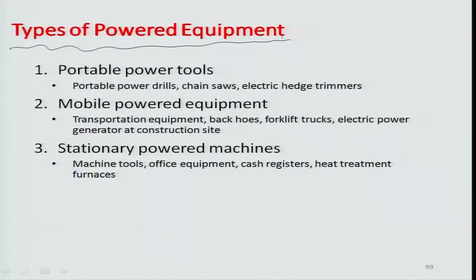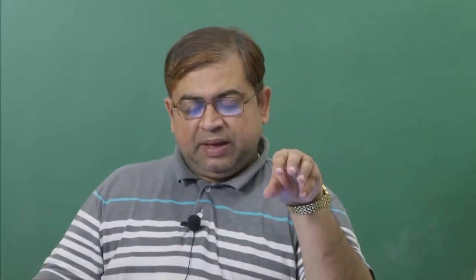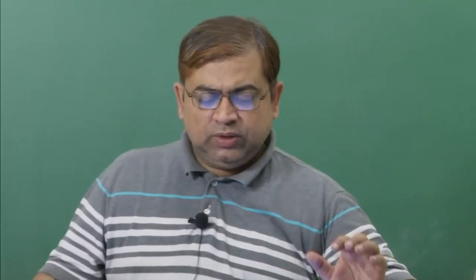When we talk about different powered equipment, there are various types available based on whether they are portable, mobile, or stationary. Portable power tools include portable power drills, chainsaws, and electric hedge trimmers — these are either wired, battery-operated, or engine-driven. You can lift them from one place to another and perform different operations with them.